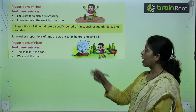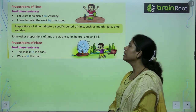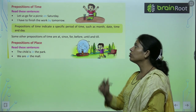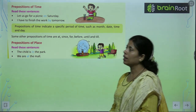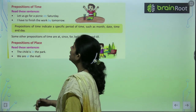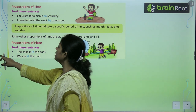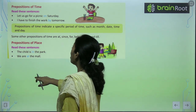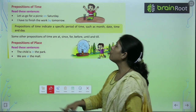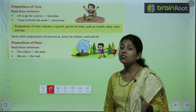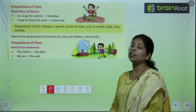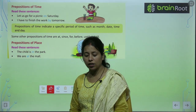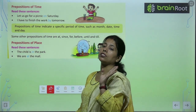Ab prepositions of time ke baare mein padhenge, prepositions of place, prepositions of movement — kya hota hai? Achhe hain, prepositions of time. Read these sentences: 'Let's go for a picnic on Saturday.' Chaliye picnic pe chalte hain. Kab? Saturday.